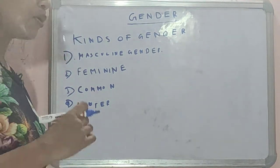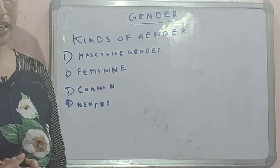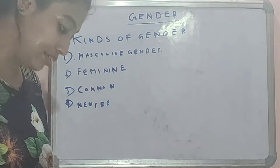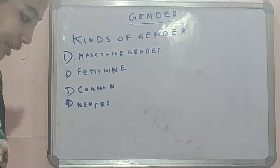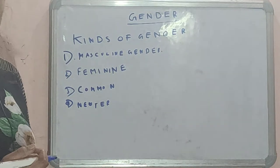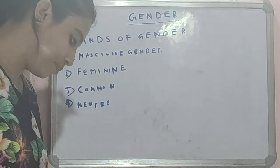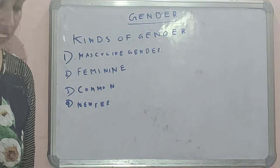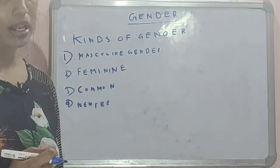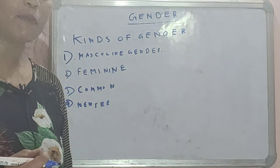Now let's talk about some masculine and feminine gender pairs. Father — mother. Uncle — aunt. Hero — heroine. Son — daughter. Peacock — peahen. Gander — goose. Nephew — niece. Bachelor — spinster. King — queen. Drone — bee.